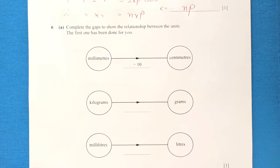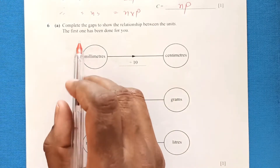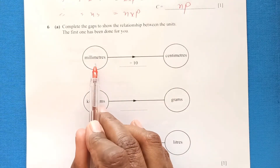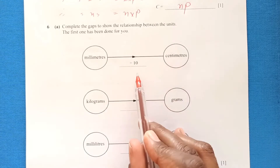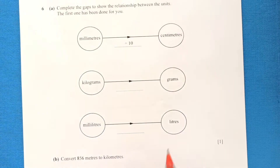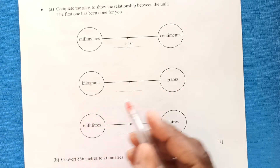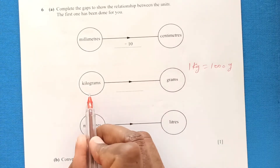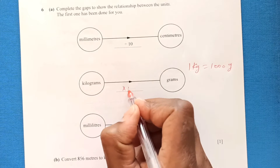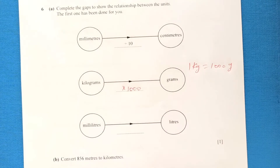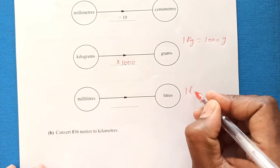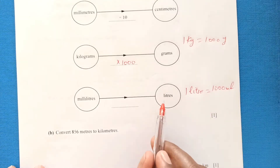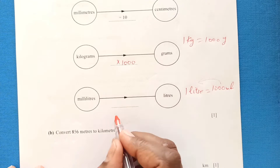Question six, part a: complete the gaps to show the relationship between units. From millimetres to centimetres we divide by 10. From kilograms to grams — since 1 kilogram equals 1000 grams — we multiply by 1000. From millilitres to litres — since 1 litre equals 1000 millilitres — we divide by 1000.